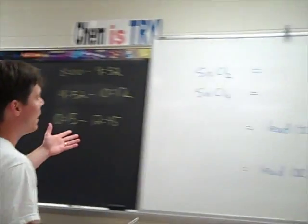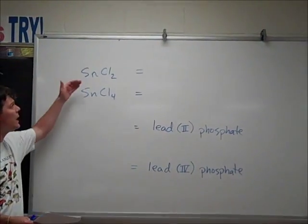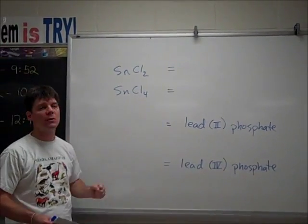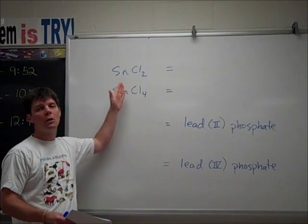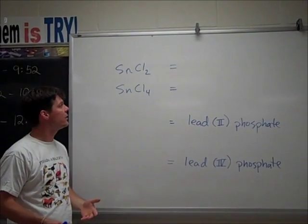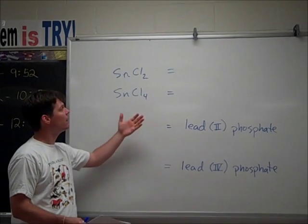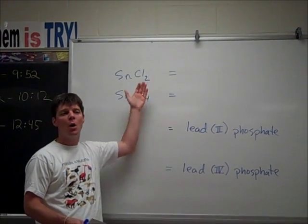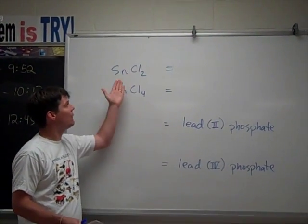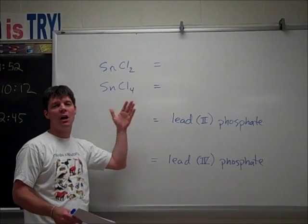Now let's look at some examples at the board. So here I have two different examples of compounds which are chlorides of tin. Sn is the symbol for tin. So I have to have a way of differentiating in their names which is which. So I have SnCl2, I have SnCl4.